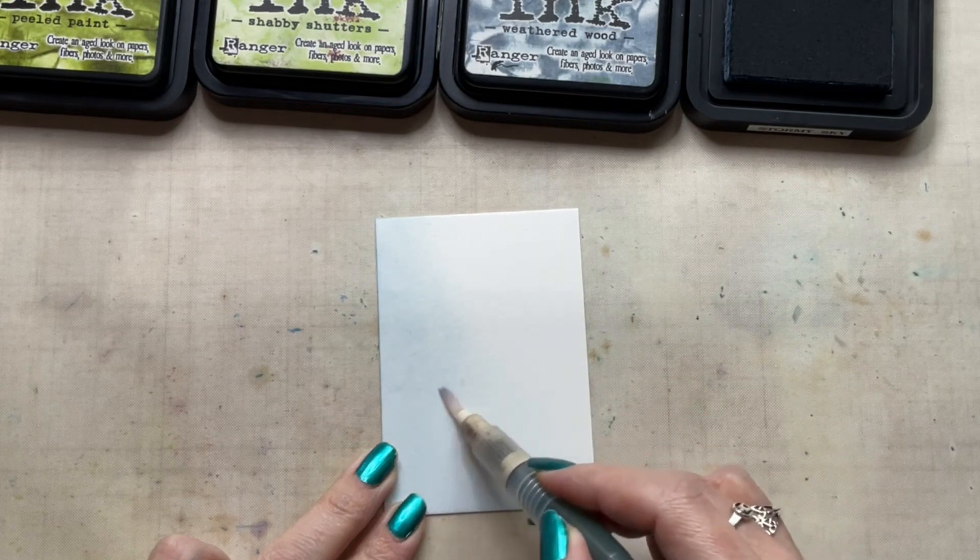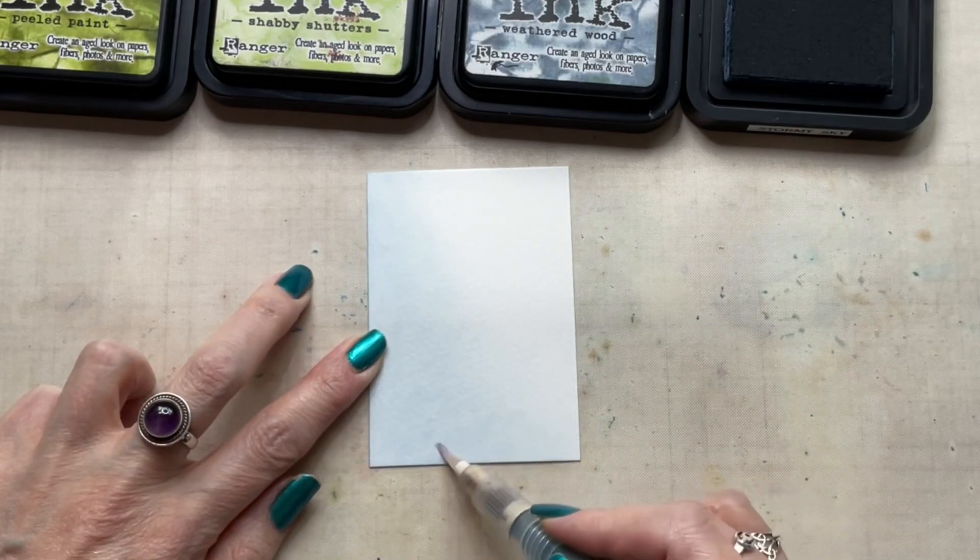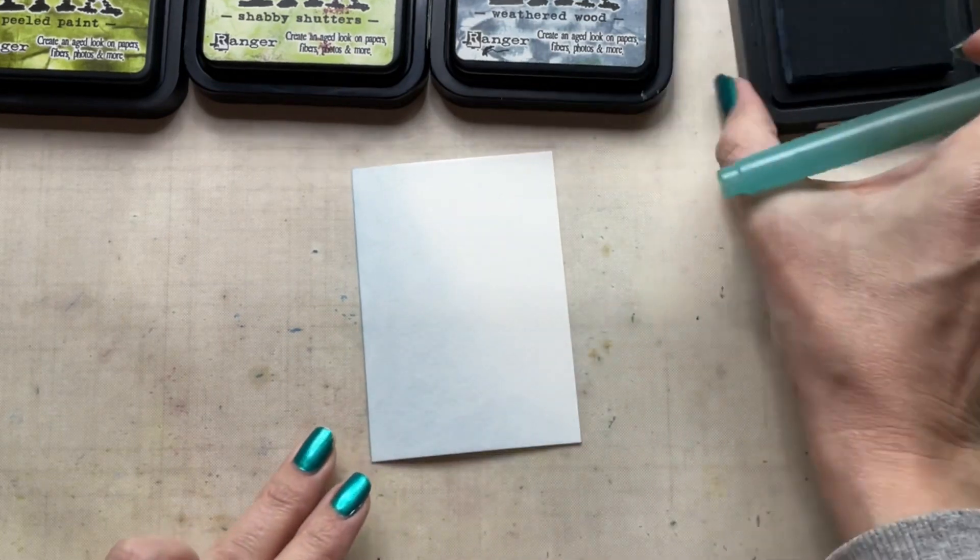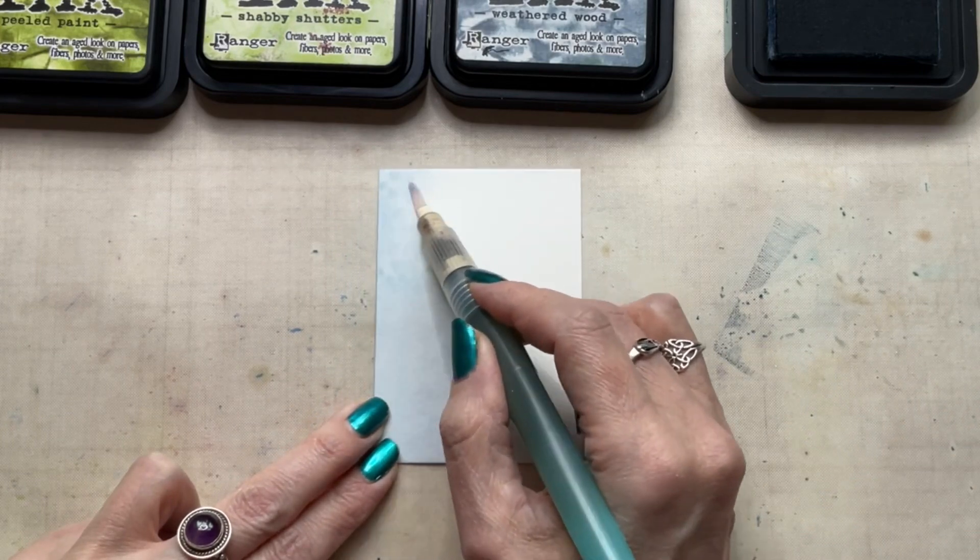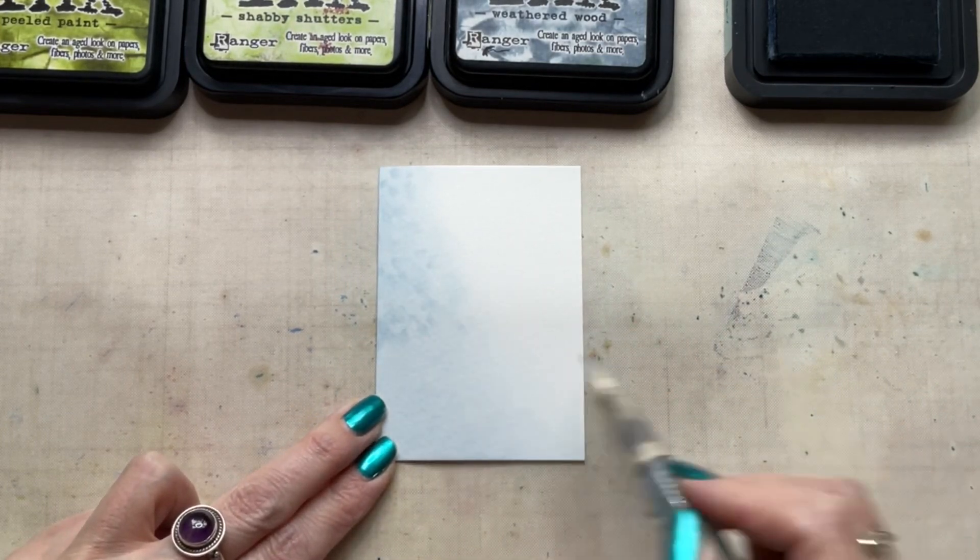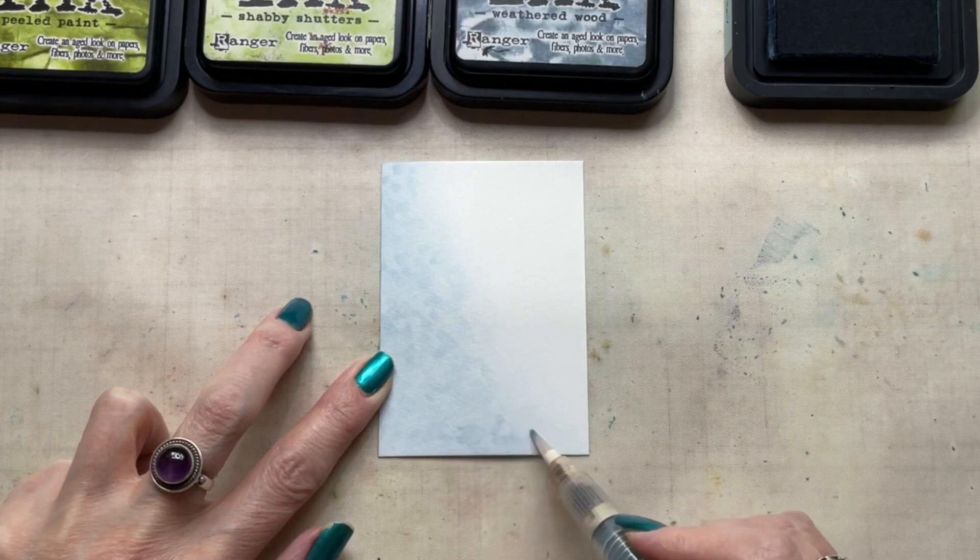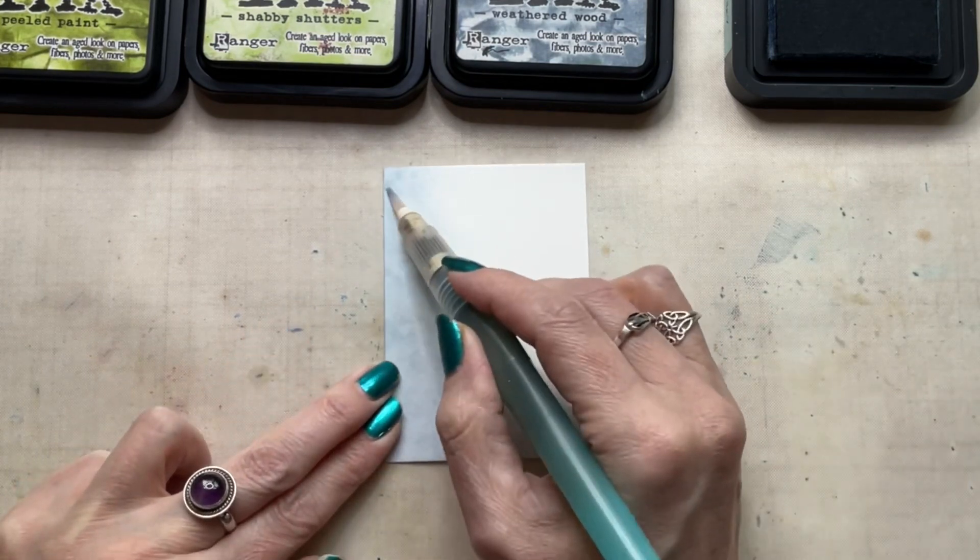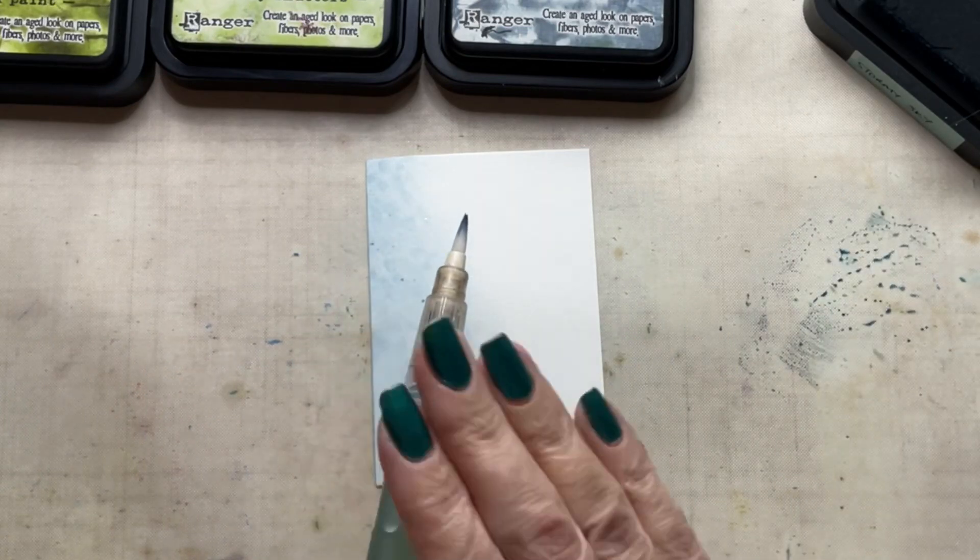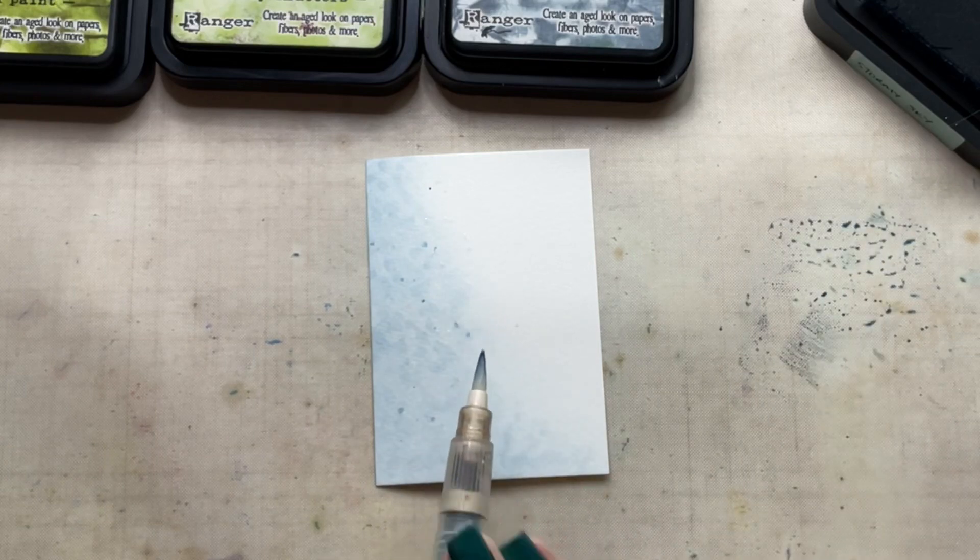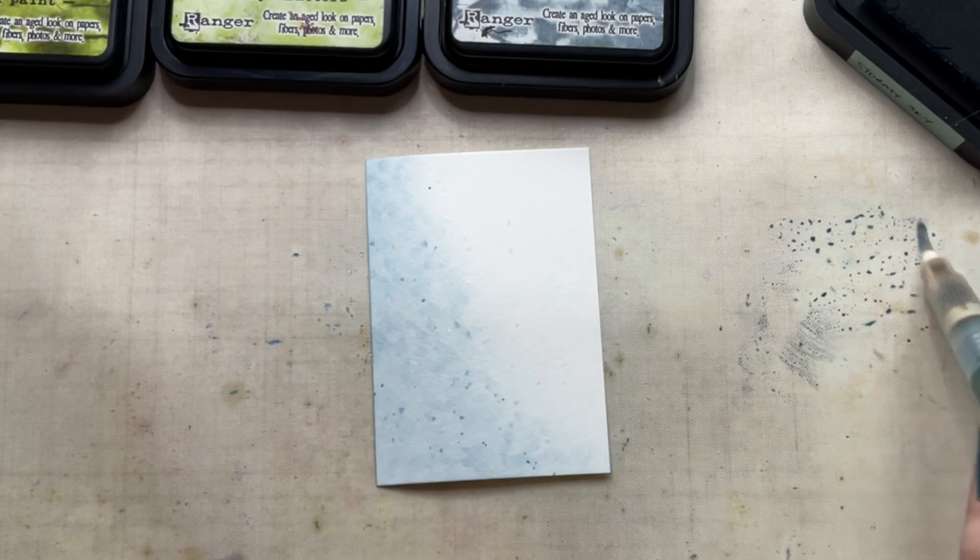I've chosen to use distress inks here, the first color is stormy sky and I've sponged this down the left hand side of the background using a piece of Ranger cut and dry foam. Now I'm using a water brush firstly to activate the ink that's been put onto the ATC and then to pick up some additional ink to create a mottled effect onto the background. This is quite subtle but it is a good way to add some interest and then finally I'm adding some splatters just by diluting that ink and splashing it on by tapping the end of my water brush.